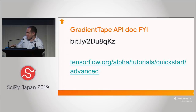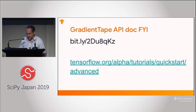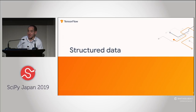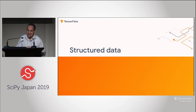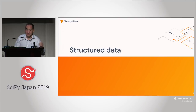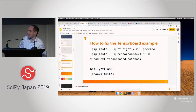We have a break until 10:45. At 10:45, Amit will walk through structured data — classifying CSV files — which is critically important in industry and is basically the number one thing people do. After that, I'll walk through advanced code for things like Deep Dream and machine translation. What's really cool about Deep Dream is that although it's very complicated, the code looks almost identical to linear regression. And because Amit is a really awesome engineer, he has fixed the TensorBoard notebook for us.